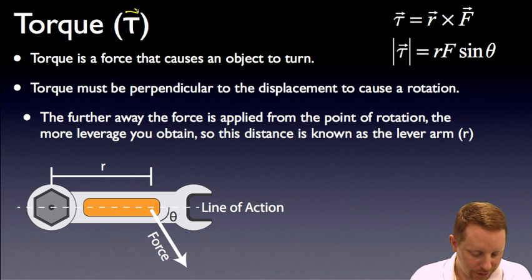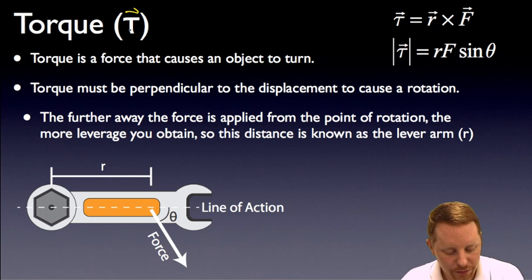Torque, a vector denoted by Greek symbol tau, is a force that causes an object to turn and you've probably talked about torque sometime in your life previously. Torque must be perpendicular to the displacement to cause a rotation. Secondly, the further away the force is applied from the point of rotation, the more leverage you obtain. So the distance from the point of rotation to where you're applying the force is known as the lever arm because it helps you apply leverage.